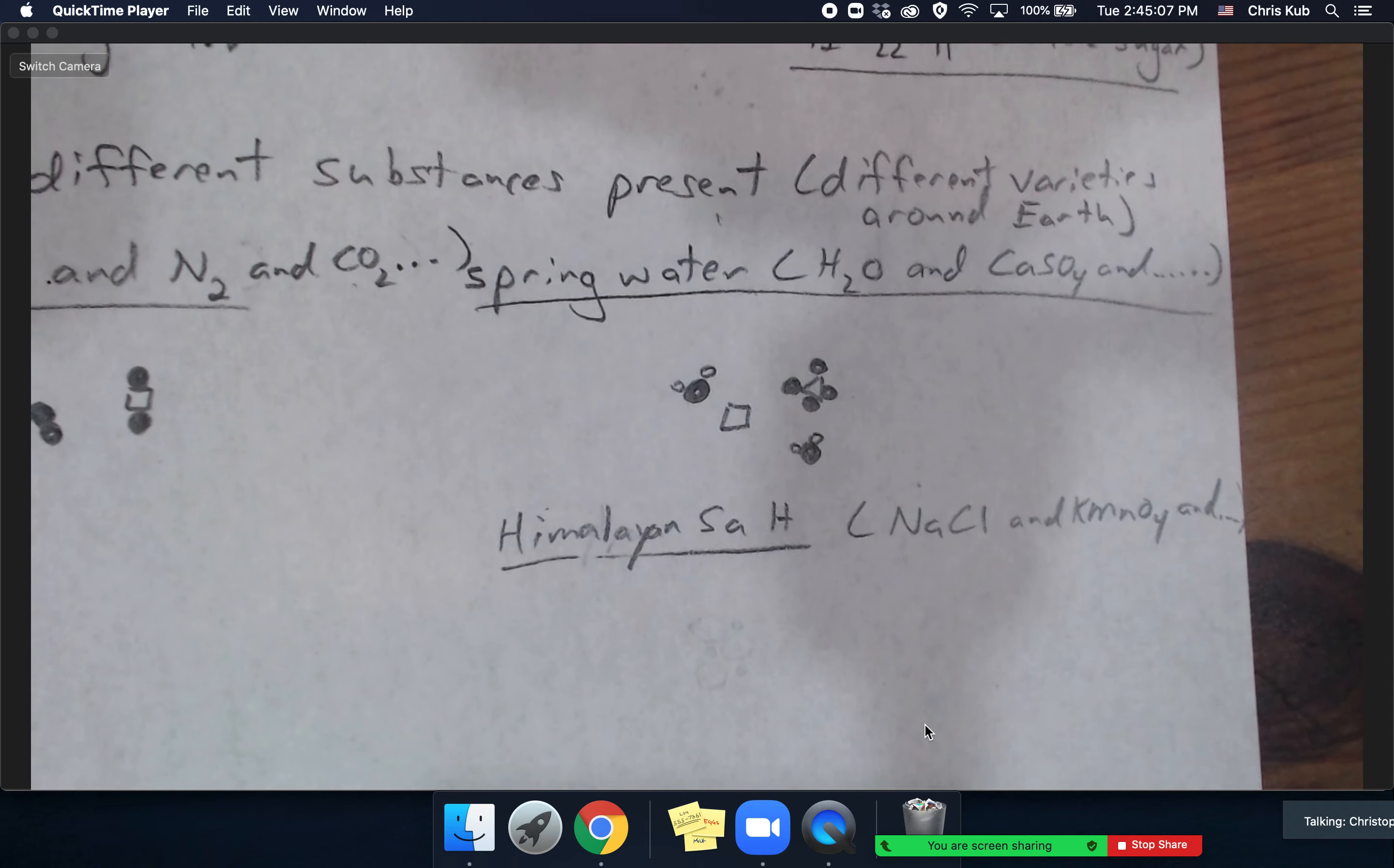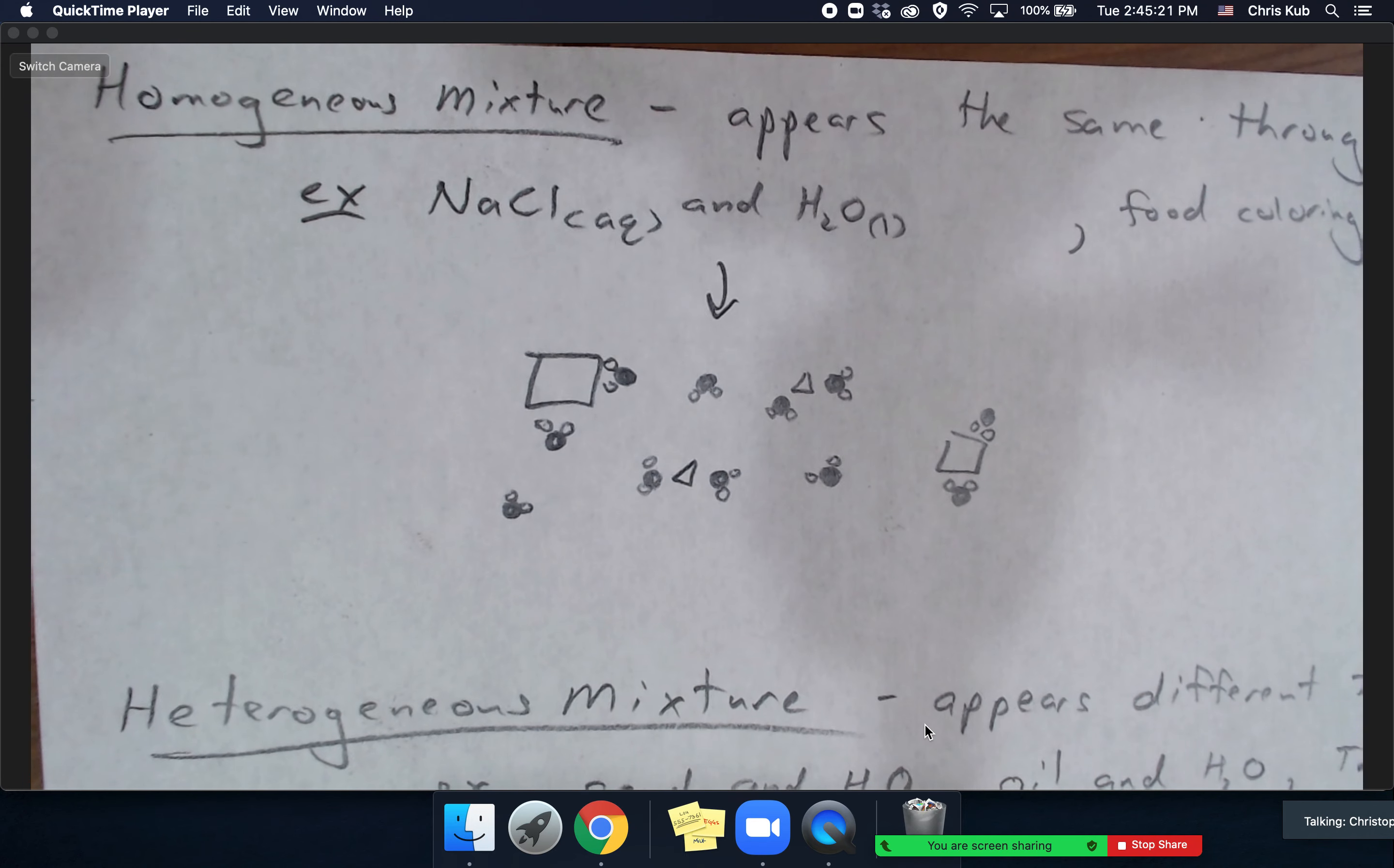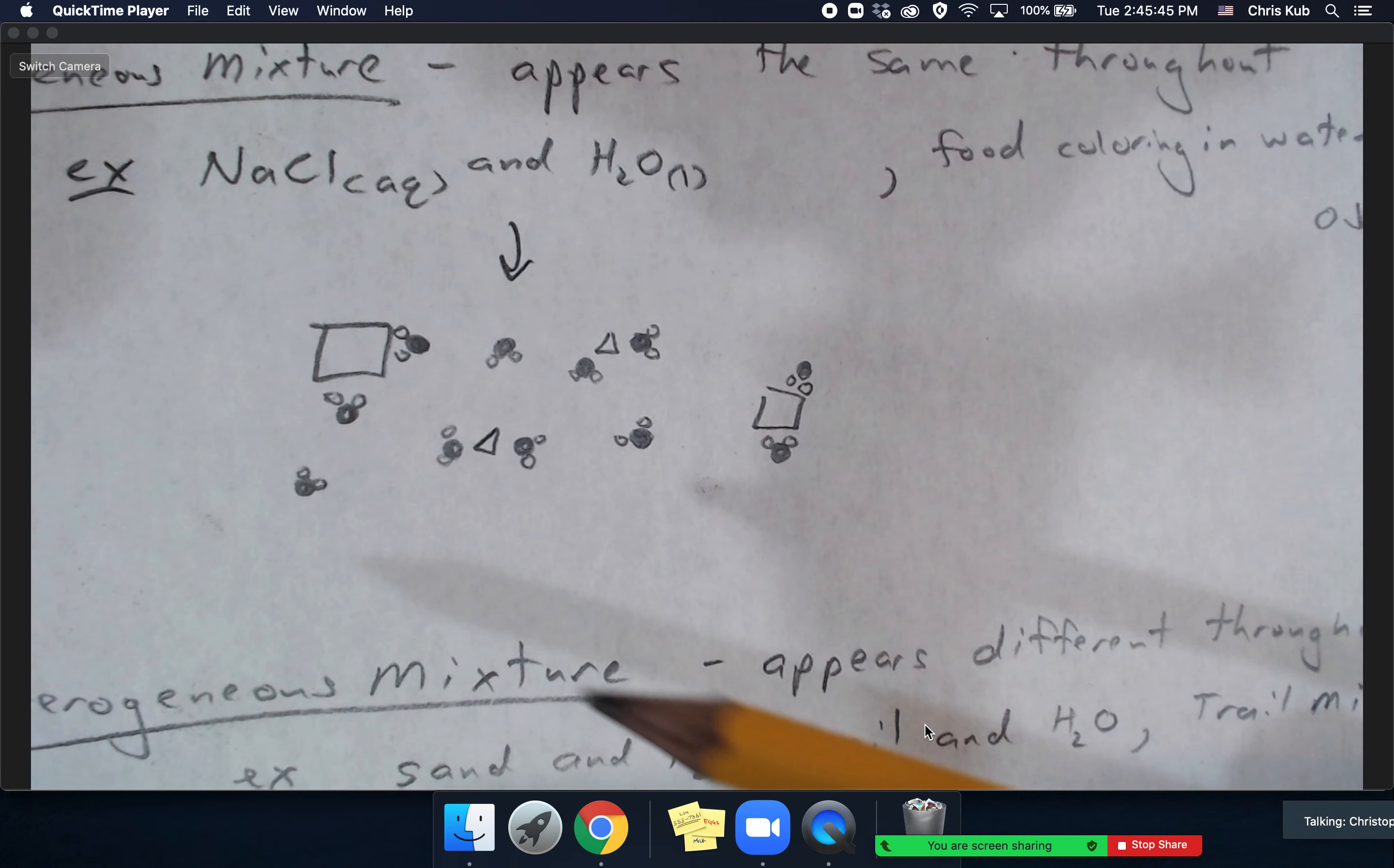Now there are two types of mixtures that you should be familiar with: there are homogeneous mixtures and there are heterogeneous mixtures. Homogeneous should mean same - homo means same, hetero means different. So homogeneous mixtures appear the same throughout. For example, if you were to dissolve pure sodium chloride into water, that sodium chloride would spread out evenly throughout that mixture if you gave it enough time and if it were not too concentrated. So it would appear the same throughout because at a particulate level there's an equal distribution of chloride ions and sodium ions.